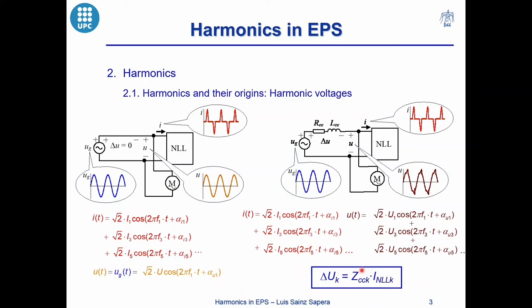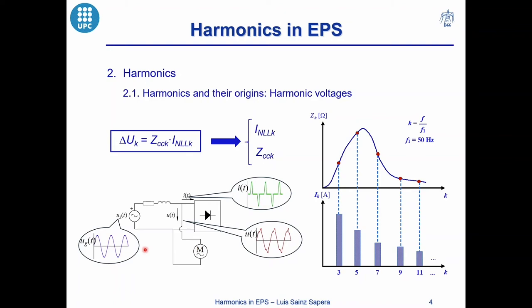This means that the harmonic voltages depend on two factors: the RMS value of the harmonic currents and the value of the grid impedance. If one of them is high, we will have large values of the harmonic voltages, and these voltages become highly distorted. For example, the value of the impedance depends on the frequency. If we have a peak value of the impedance at one of the frequencies of the harmonic currents injected by the nonlinear loads, we could have a harmonic problem with the voltages.